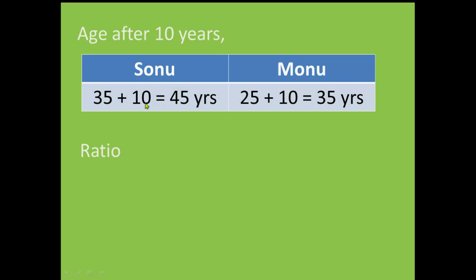Let us check after 10 years. Age after 10 years will be 35 plus 10 is equal to 45, and 25 plus 10 is equal to 35. So let us find out the ratio: it is 45 divided by 35. We simplify it, we will get 9 over 7. So it is as given in the problem. So that means our solution is correct.